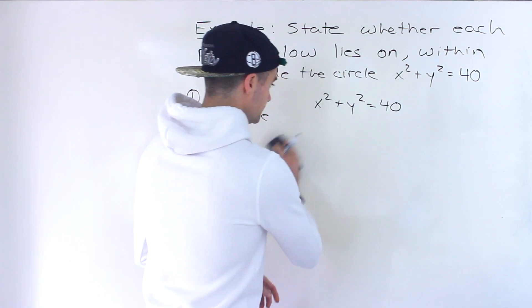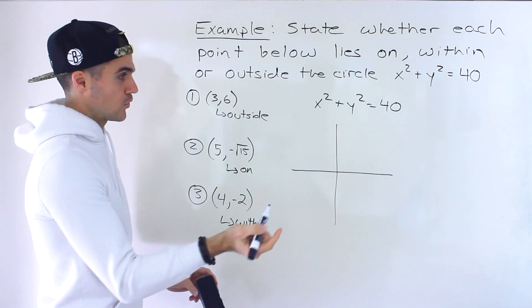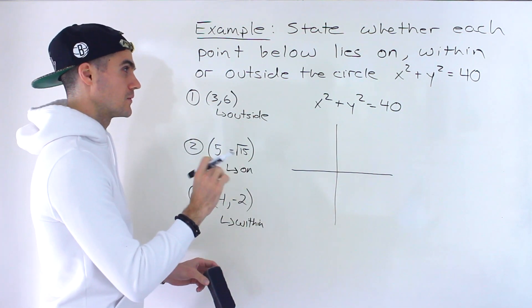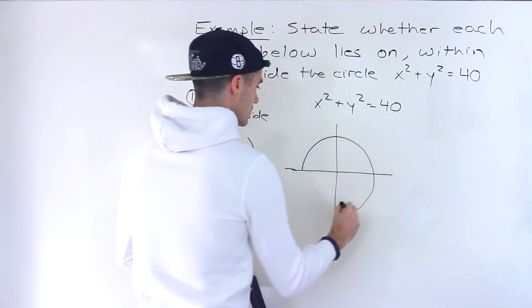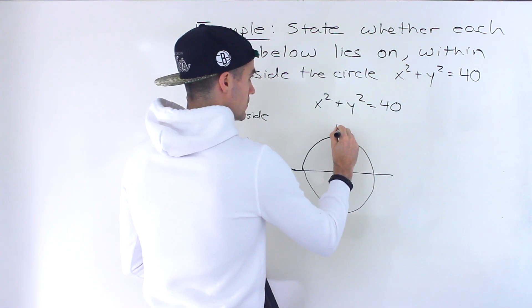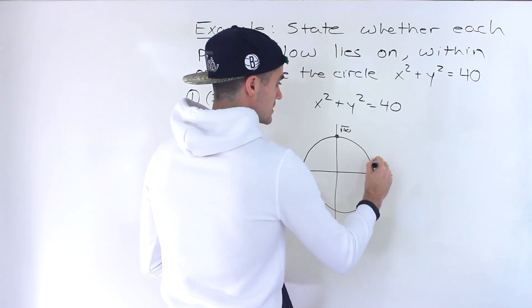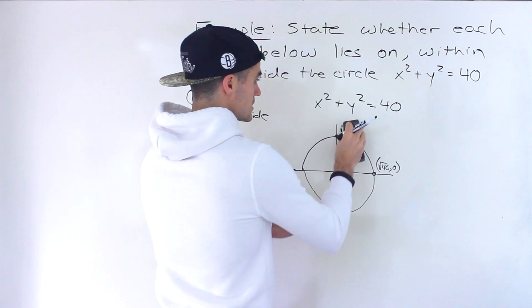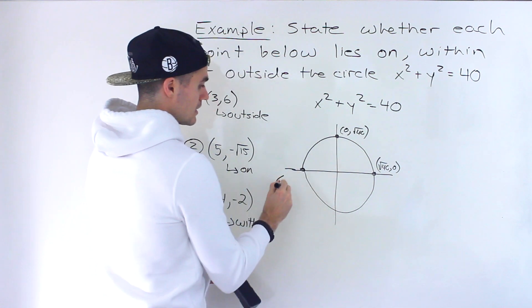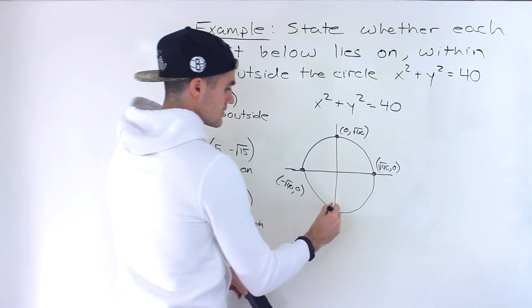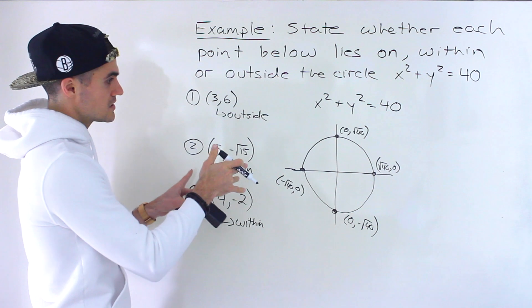Graphically if you were to draw this, what would the radius be? It would be the square root of 40 which would be approximately 6 point something. If we draw a circle, this is going to be root 40, this is going to be root 40. If we put the whole coordinate, this here is going to be 0 comma root 40, this is going to be negative root 40 comma 0, this is going to be 0 comma negative root 40.